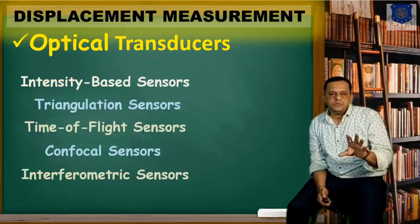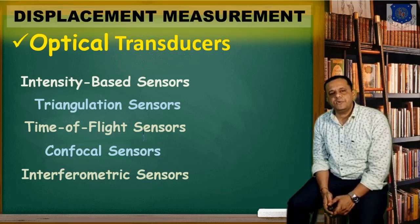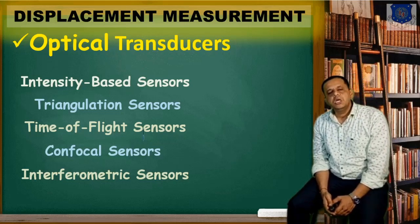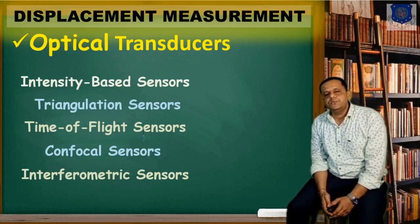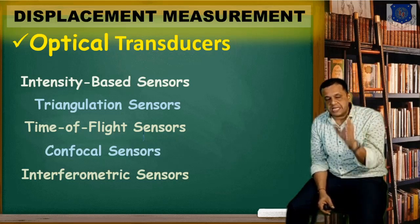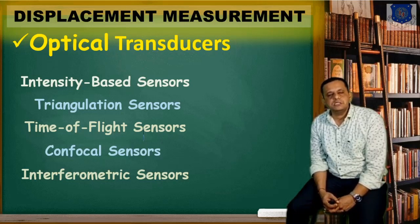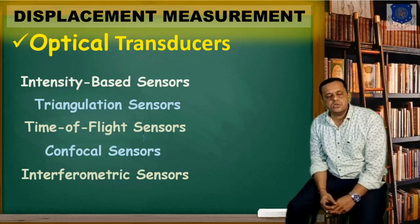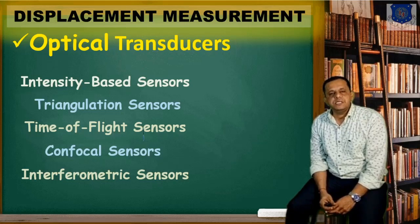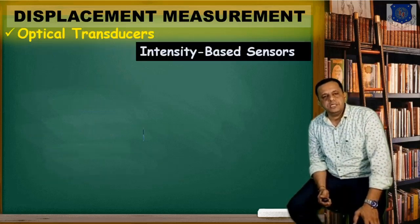The types of optical transducers include intensity-based sensors, triangulation sensors, time-of-flight sensors, confocal sensors, and interferometric sensors. Triangulation and time-of-flight sensors, as well as a subtype of interferometric sensor, have already been asked in previous exam papers. We will be looking into fiber optics briefly as well.